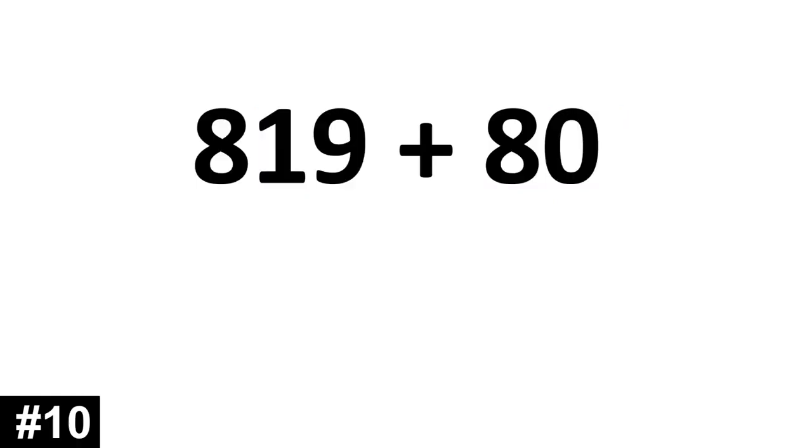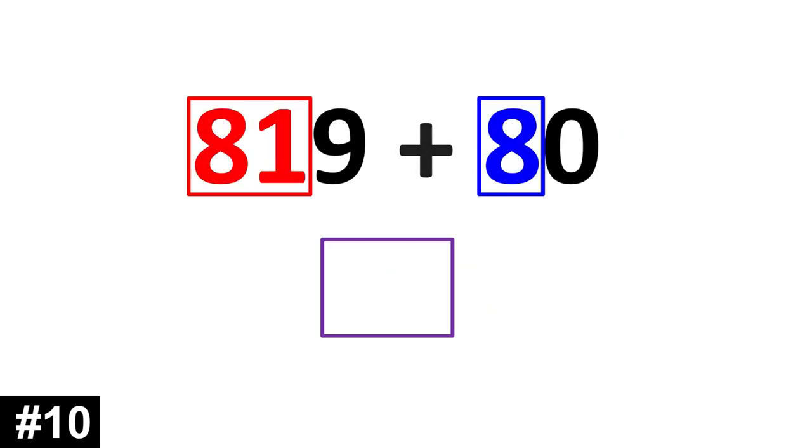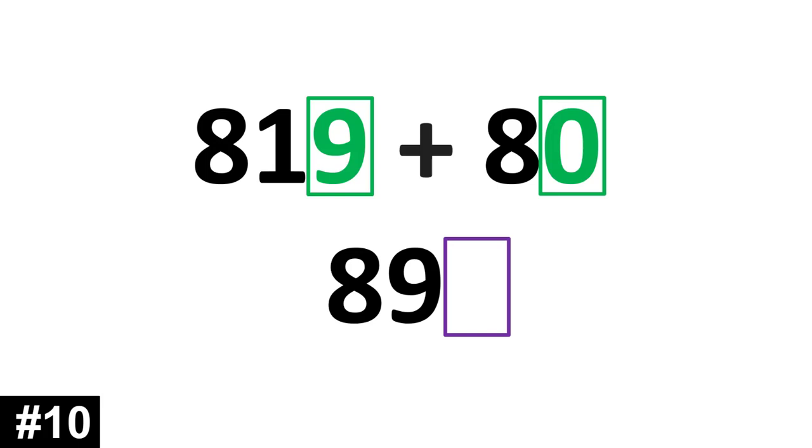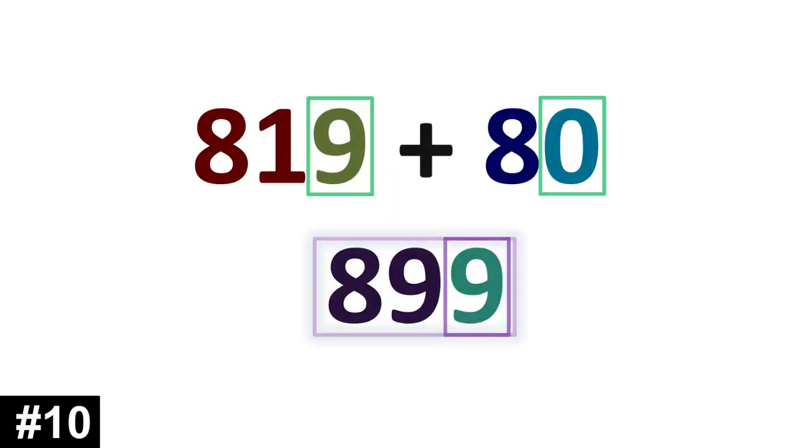819 plus 80. 819 has 81 tens. Add that to the 8 tens of 80. 81 plus 8 gives us 89. We look to the ones. 9 plus 0 is 9. 899.